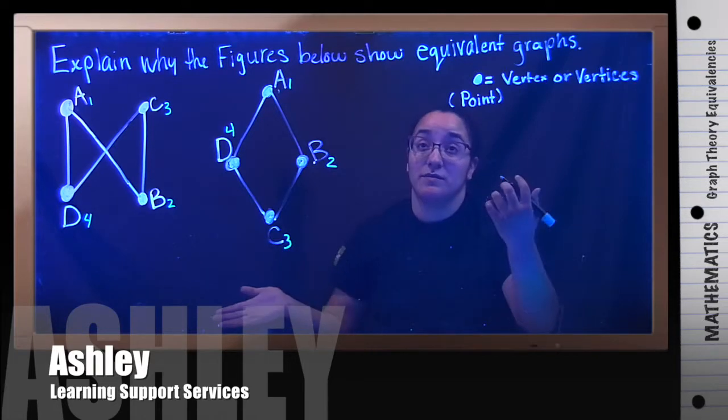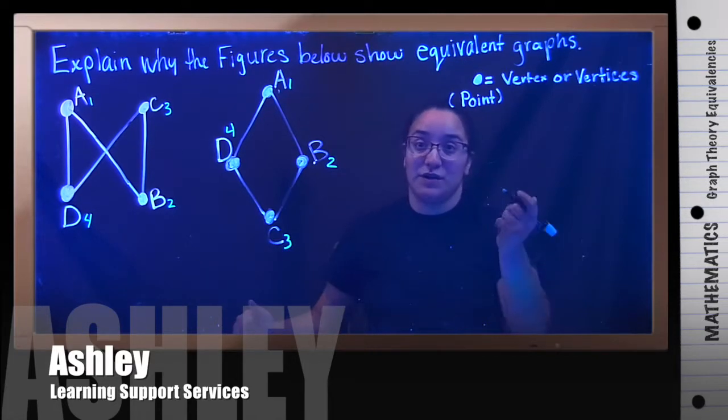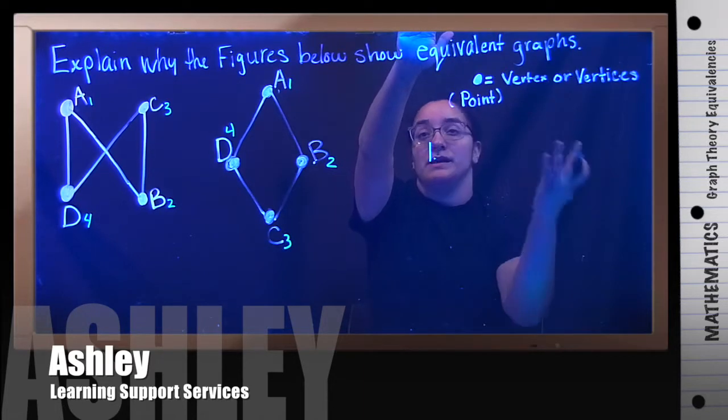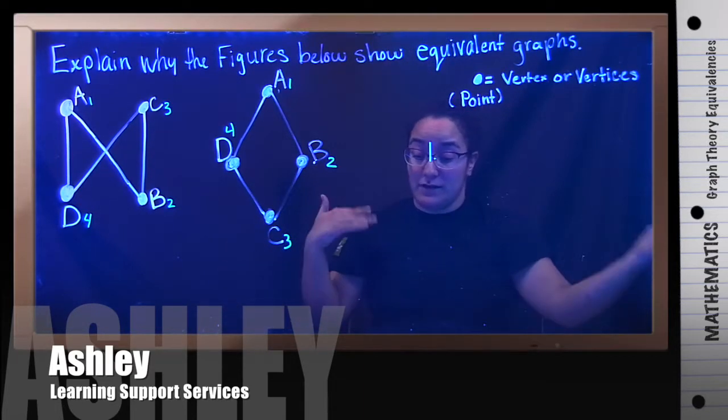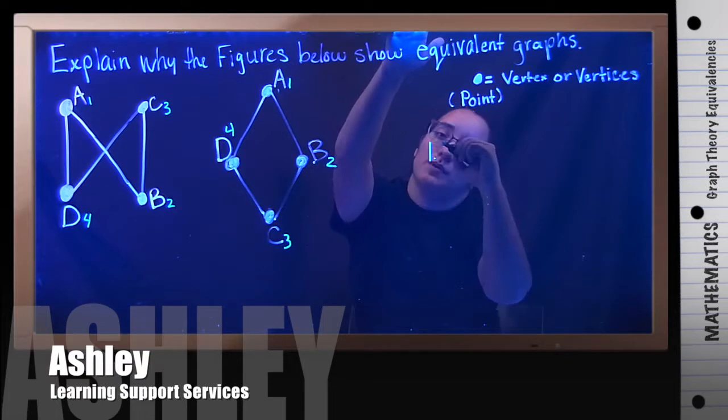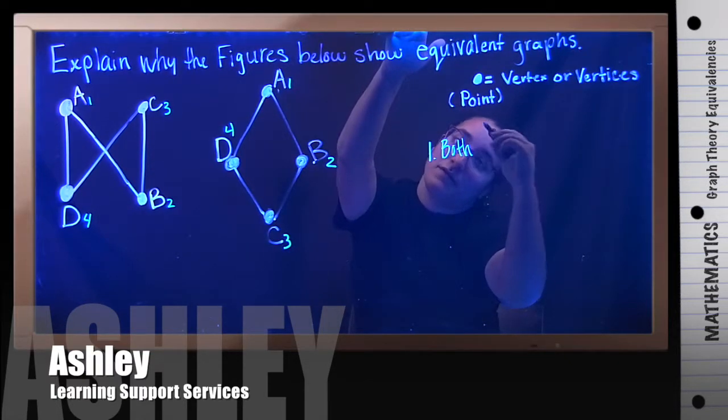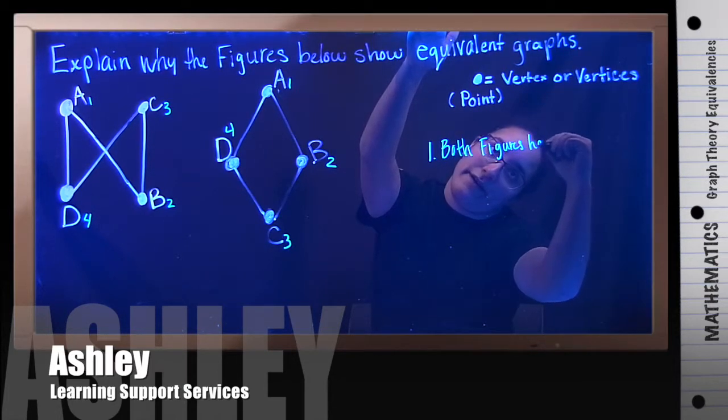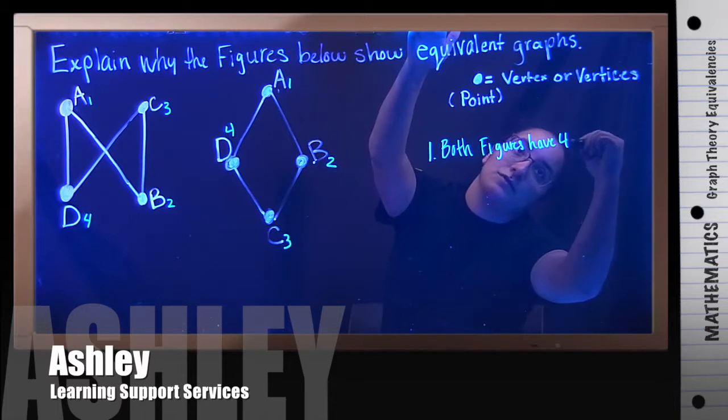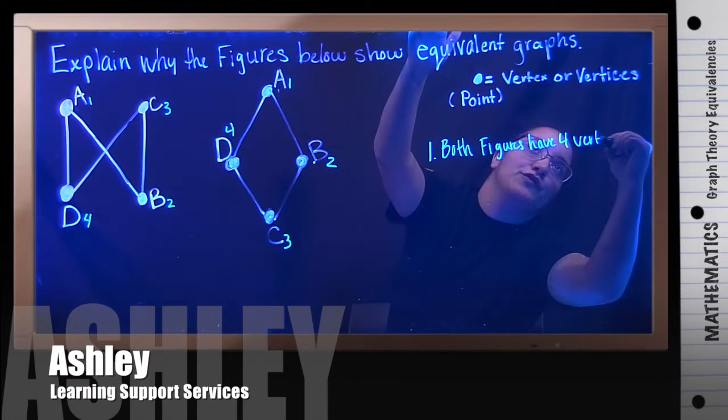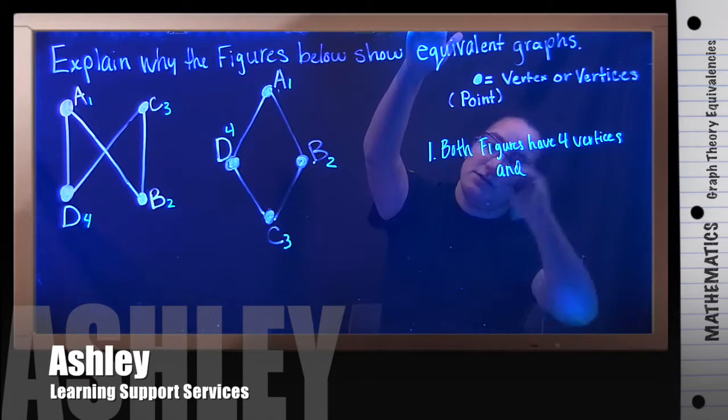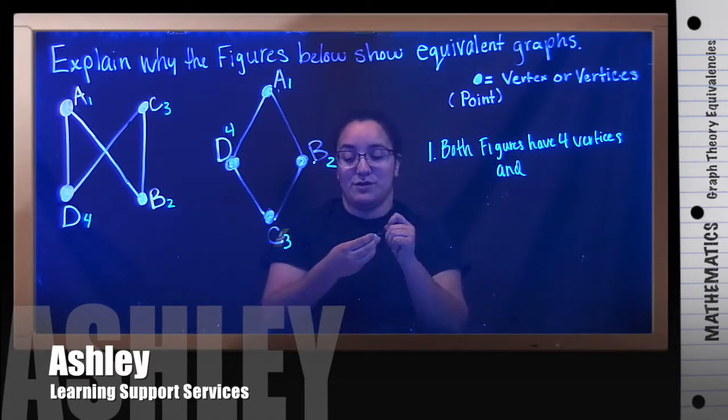Remember, when we're answering a problem like this, it's a two-part answer. Part one is: yes, they both have four vertices. We're going to write 'both figures have four vertices,' and then 'and,' because we have to look at part two.